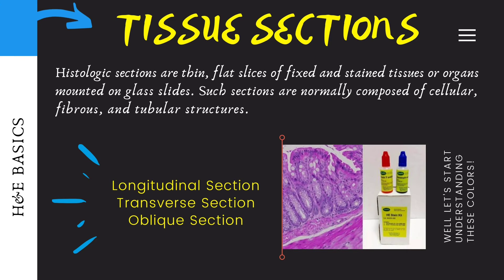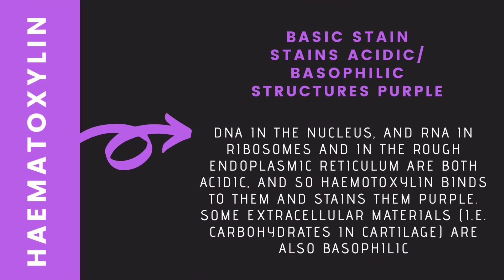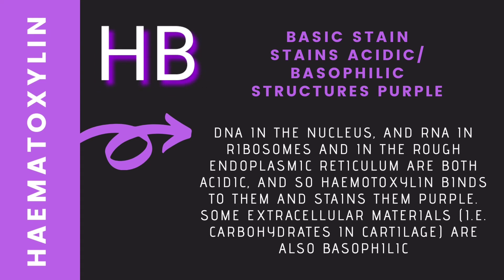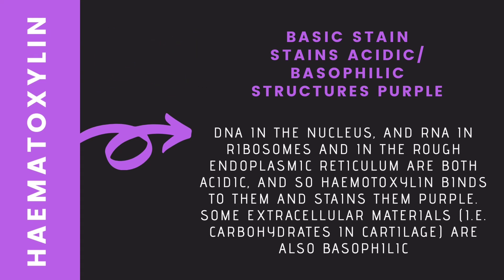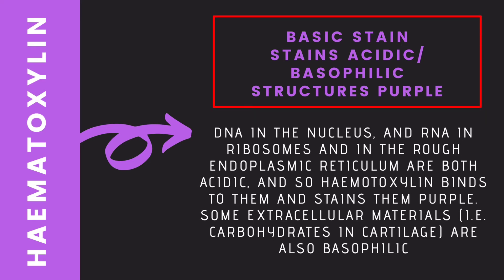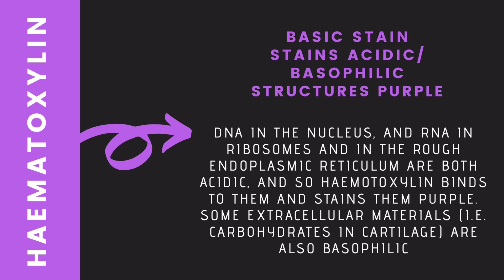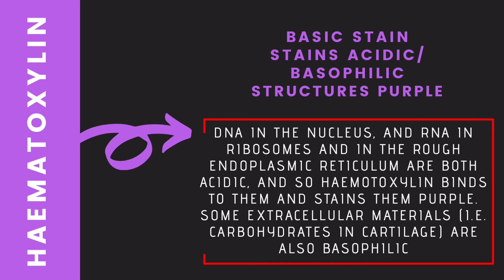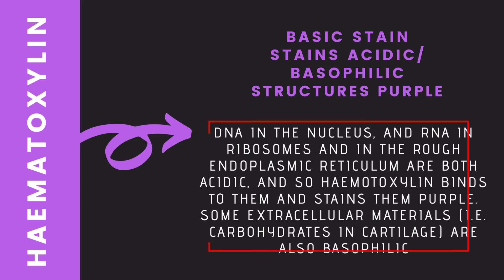So let us now learn about H&E stain in detail. Hematoxylin is a purple colored basic stain. To avoid any confusion, you can remember it as HB — we have HB pencils, so you can remember it that way. As it is a basic stain, it will stain all the acidic or basophilic structures present in the cell purple. All of us know there are two acidic structures present inside the cell: DNA and RNA. DNA is present in the nucleus, and RNA is present on the ribosomes and also on the endoplasmic reticulum in RER. Apart from these two structures, some extracellular material like carbohydrates present in cartilage are also basophilic. Remember these structures — they will stain with hematoxylin dye.